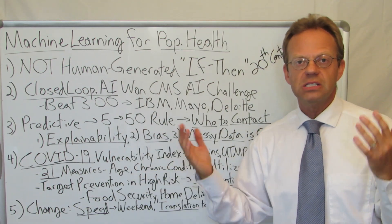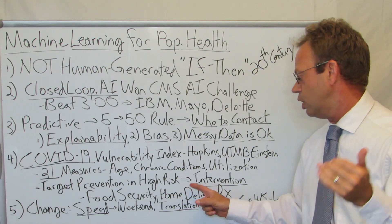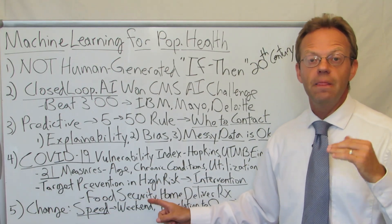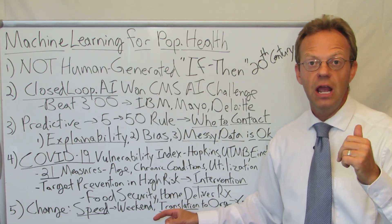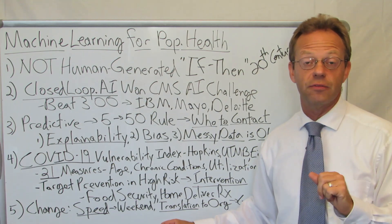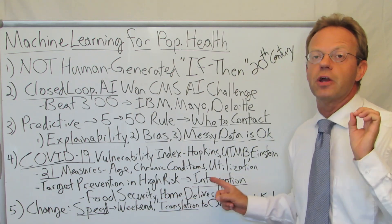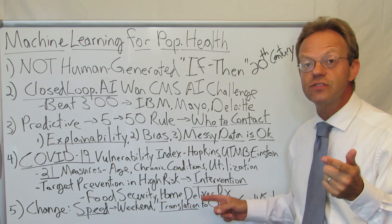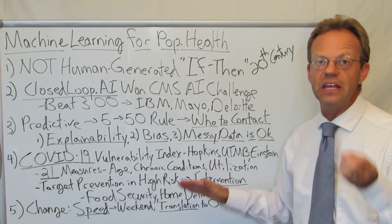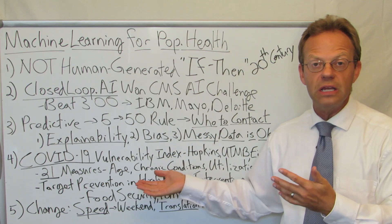Now, why would you want to do this? Because if you were a hospital system or a health plan, you would want to target preventive measures specifically for those high-risk people. Especially in the early days of COVID, specific literal interventions were done — this is not theory. One was around food security: they identified people at high risk of serious complications and said, we don't want you going to the grocery store where you might pick up COVID. So they literally arranged for groceries to be delivered to their house, or worked with family members to bring groceries. Two: they made sure these people especially got home delivery of their prescriptions, so they were not leaving their house to get medications filled.